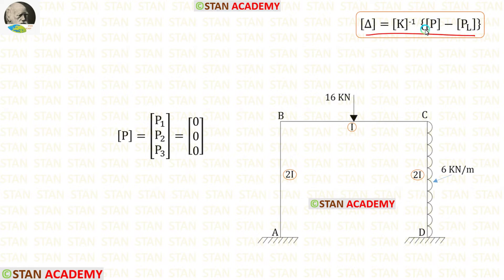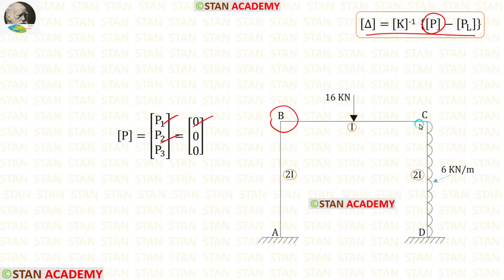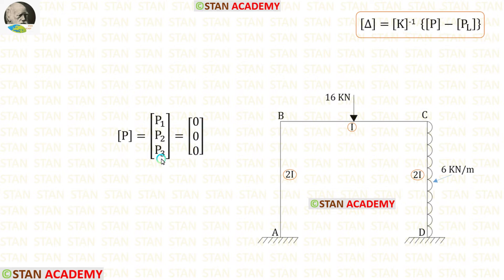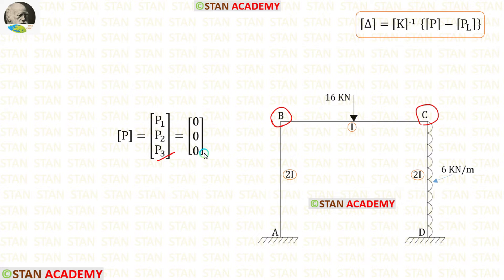Let us find the P matrix. For P1, we check point B — there is no moment applied, so P1 = 0. For P2, we check point C — there is no moment applied, so P2 = 0. For P3, our third coordinate is the sway. We check if there is any horizontal load at points B and C — there is none, so P3 = 0.